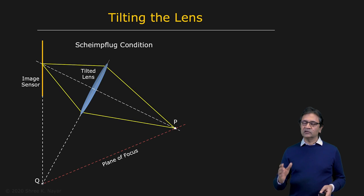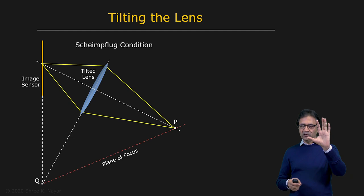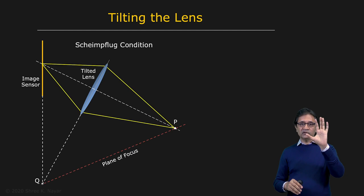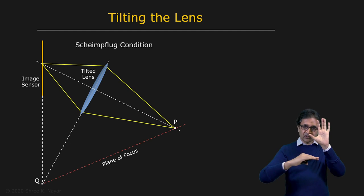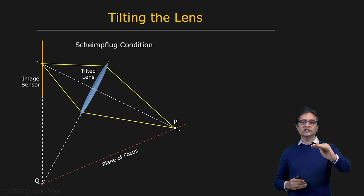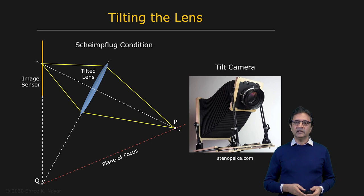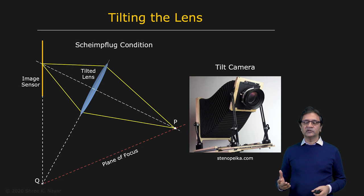The utility of this system is that there are applications where you want to keep in focus not a plane parallel to the image plane, but a different plane — for instance, a ground plane. If you're out in the street and want to capture everything on the road in focus without caring about the sky, you can tilt the lens to ensure the entire ground plane is in focus. This construction is called the Scheimpflug condition, and tilt cameras are indeed available commercially. Photographers use them to capture images with depths of field very different from what a normal camera would give.